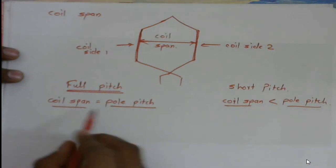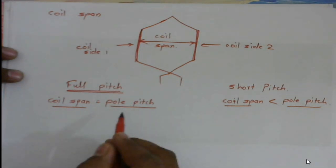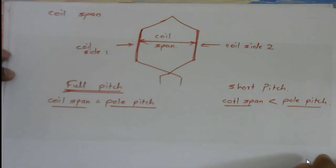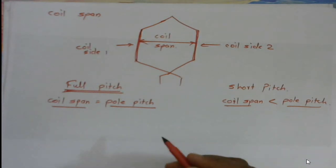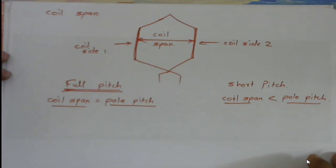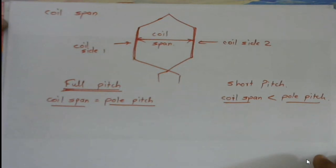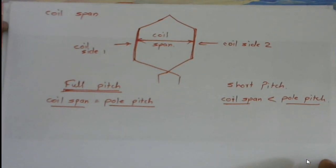So in our case, we are going to consider full pitch winding only, and we'll draw the diagram for full pitch. So if this is clear, let us move further with how exactly we are going to do the winding, how to do the connections, what is the sequence, and what is the significance of phase in case of winding diagram. So with this we'll stop here. If you are having any queries, you may contact me, you may comment, and please subscribe for further update. Thank you so much.